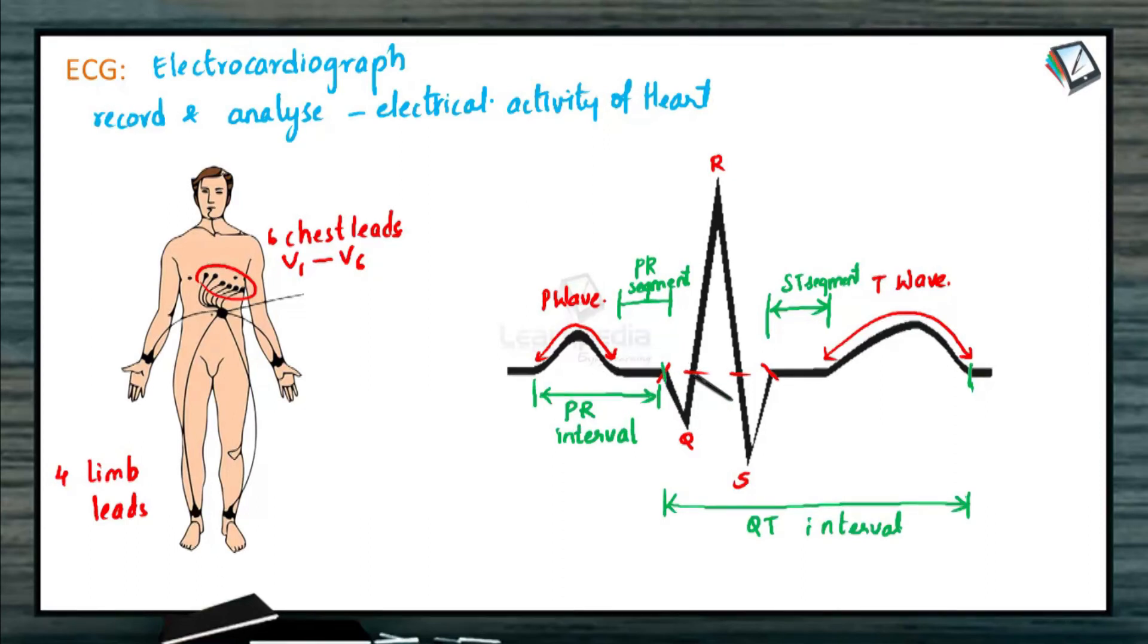If the PR interval is very long, then it means that the heart shows bradycardia, that is slow beating of the heart. In case this PR interval is shortened one, it infers tachycardia, that is fast beating of the heart.